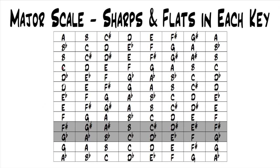Right now it's just in alphabetical order, but I want to order these differently. We're going to start with sharp keys — a sharp key just means that the key has sharps in it, meaning one or more of the notes has a sharp. It doesn't mean the key has to start with a sharp like F sharp. For example, G has one F sharp in it, so that's a sharp key. Or E has four sharps, so that's a sharp key as well.